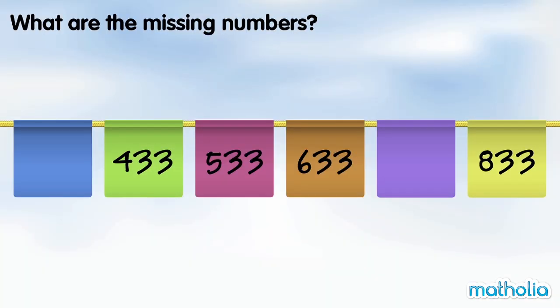What are the missing numbers? 433 plus 100 is 533. 533 plus 100 is 633. In each step the numbers go up by 100.